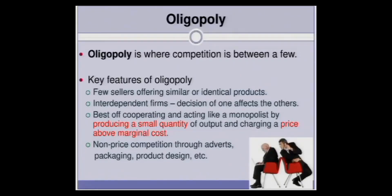Key features of oligopoly: there are few sellers, and they are either offering similar, identical, or differentiated products. It could be any type, depending on how cooperative the businesses are. You can look at the crude oil business — there aren't many oil suppliers in the world and the products are more or less identical. But you can also look at mobile phone suppliers, where products are differentiated: some have large screens, some have high-megapixel cameras, some have high-capacity batteries. That is differentiation in oligopoly products.